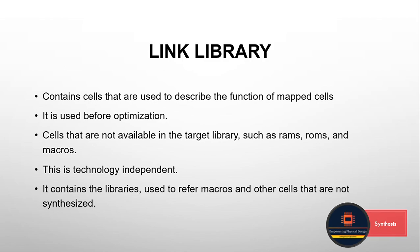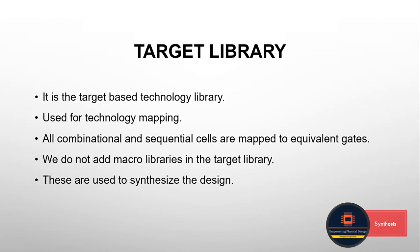Now let's see what target library means. The target library, as the name suggests, is a target-based technology library — it is specific to the particular technology node for which the design is being worked on. This library is provided by the foundry. We use this library during synthesis for technology mapping, as it contains technology-based cells. Unlike link library which is technology-independent, target library is technology-dependent.